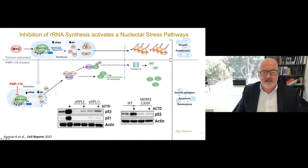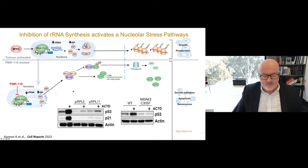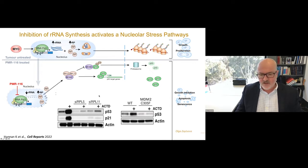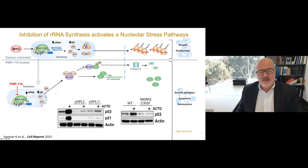A Western blot for P53 shows that when we add actinomycin D at low doses — which inhibits POL1 transcription selectively — we get a massive upregulation of P53. If you knock down L5 or L11, you completely block that activation, showing it is dependent on L5 or L11. Similarly, using a version of MDM2 with a mutation that prevents L5 and L11 binding completely blocks the activation of P53, demonstrating that this accumulation of P53 is completely dependent on the nuclear surveillance pathway.